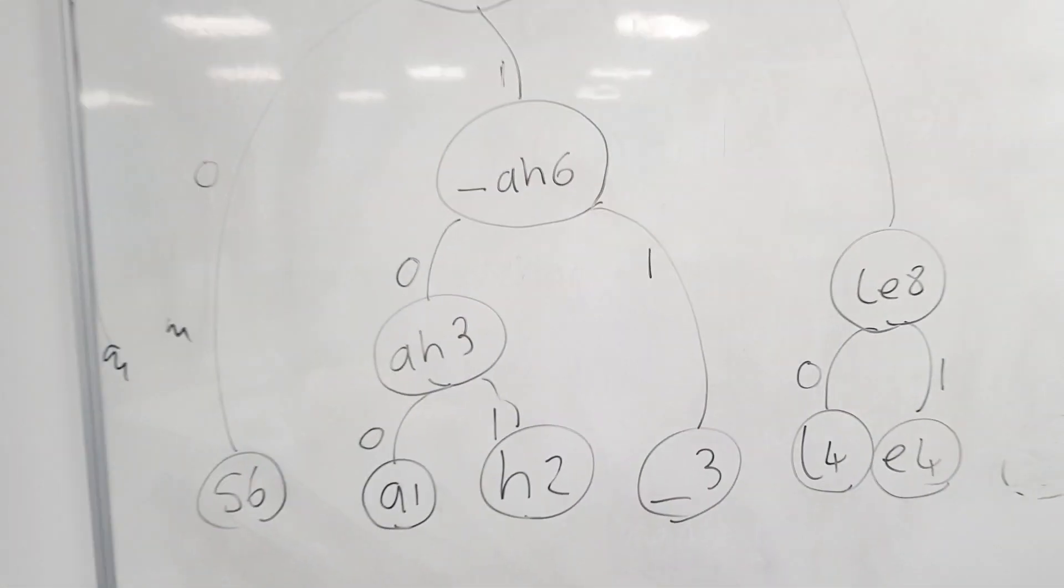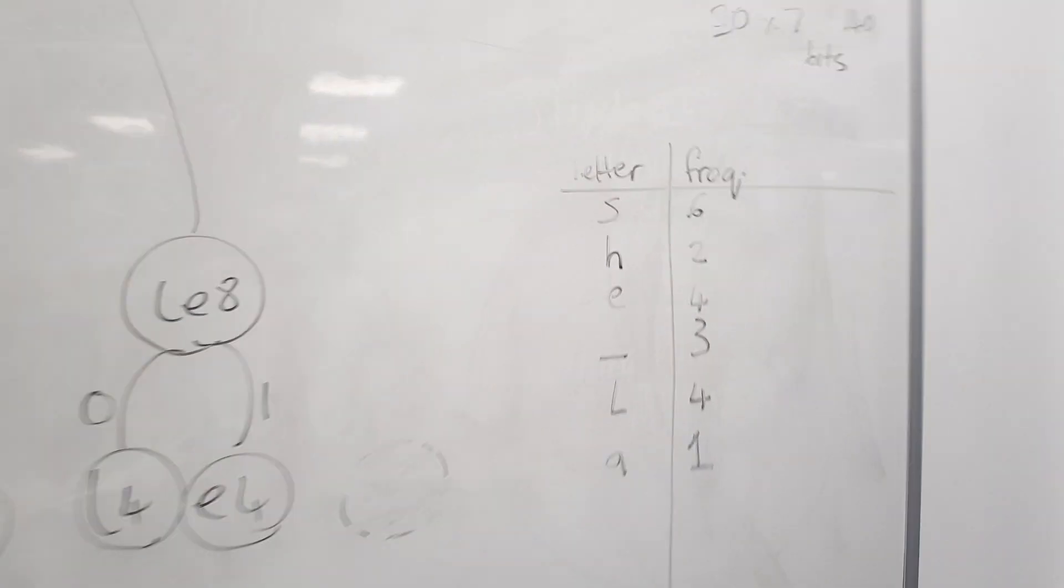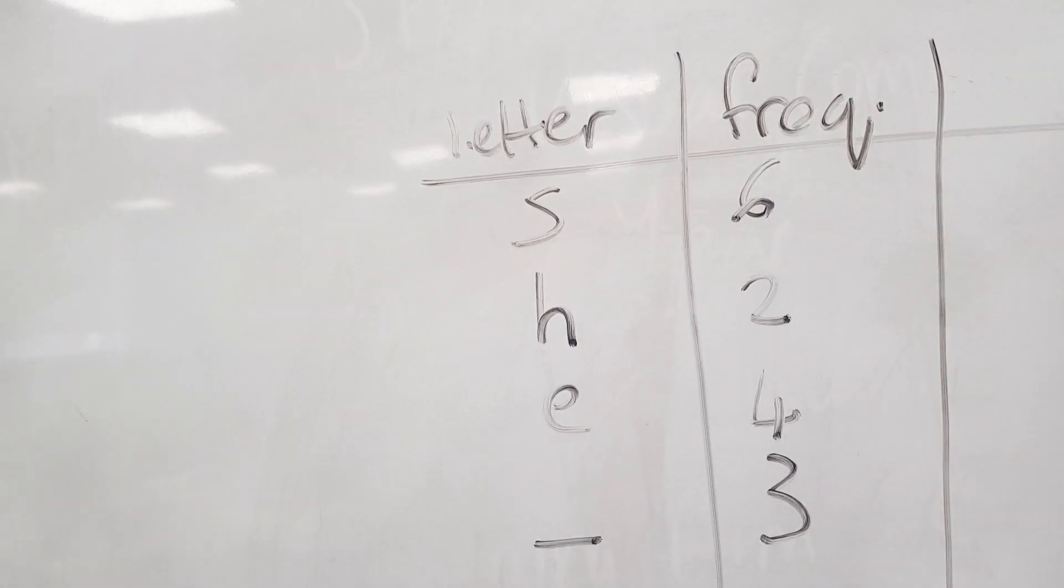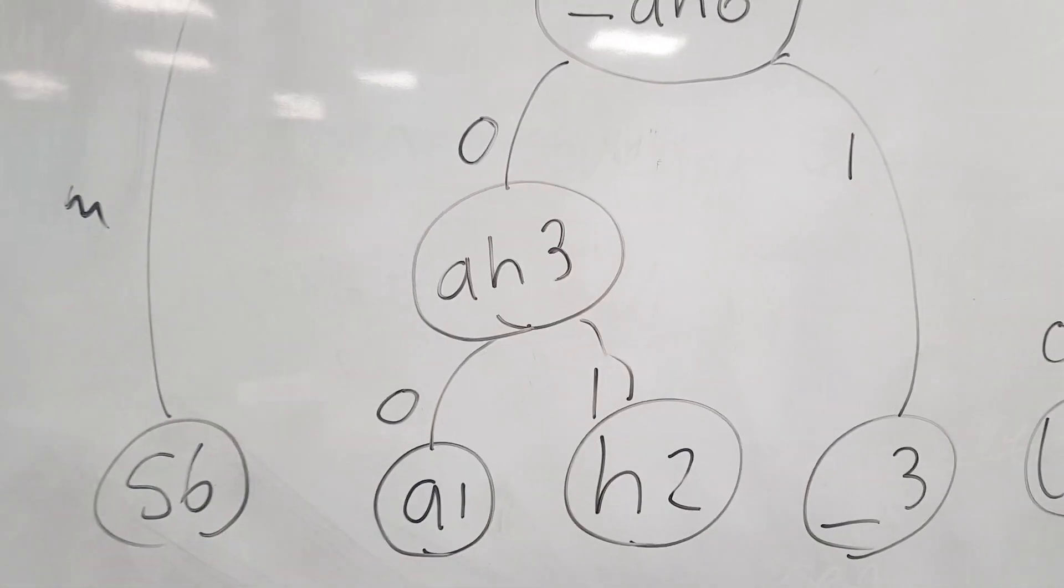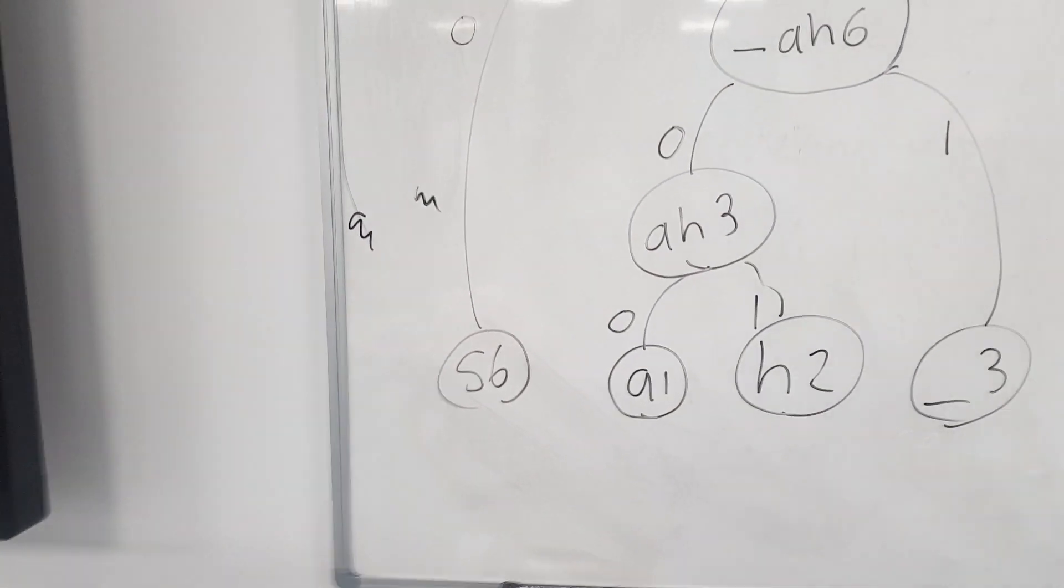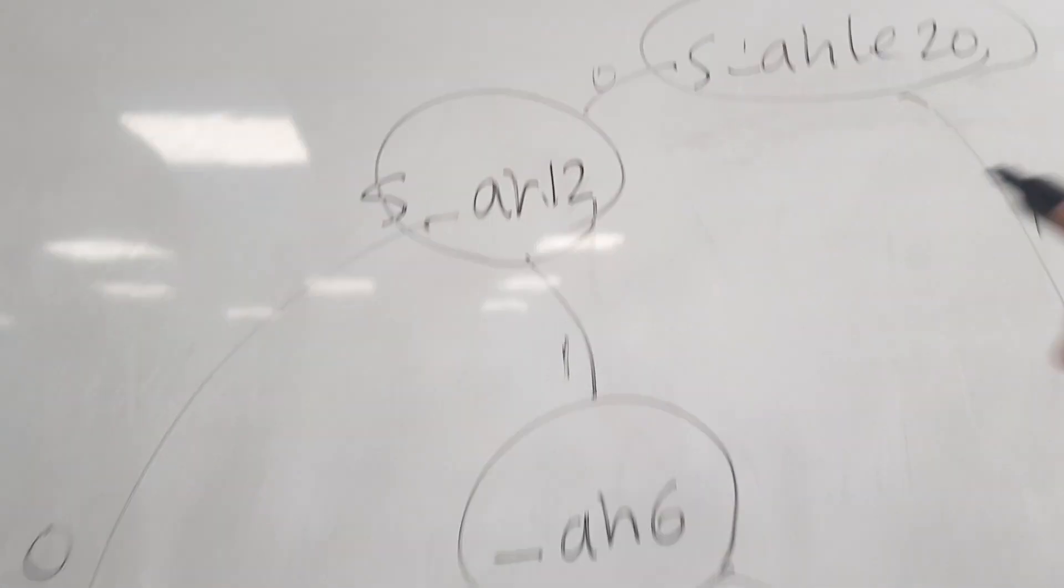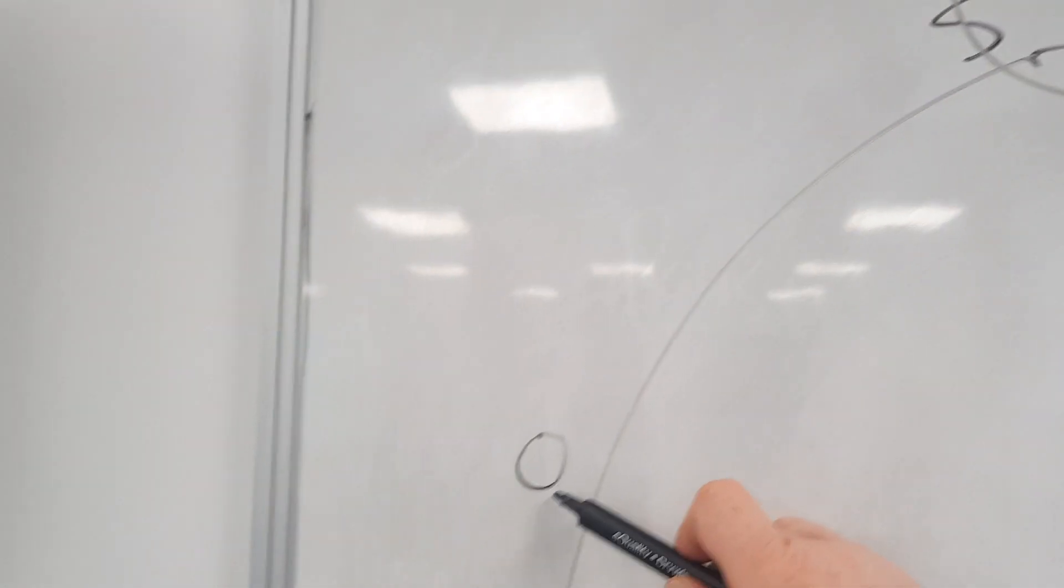Now from this we can derive a binary code for each of our letters in the frequency table. So if we look for the letter S, which is the most frequently occurring letter, we see that the code will be 00, so we put that in here.